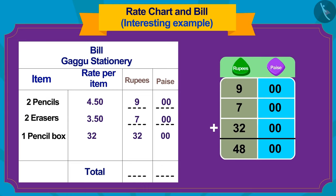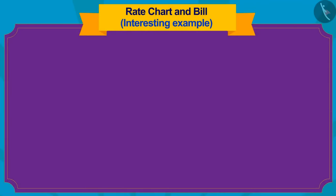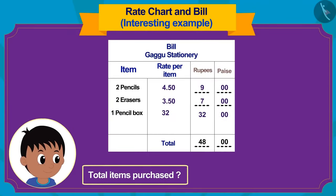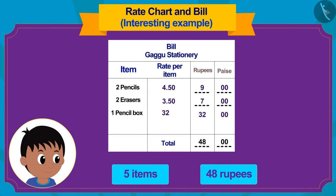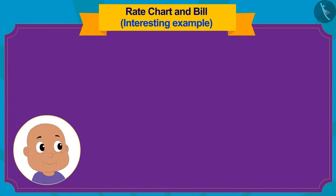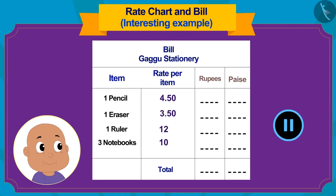Let us write it this way in the bill. In this way, Raju bought a total of 5 items for 48 rupees. Here is a bill for Bablu's purchased items. Can you complete it and find out whether Bablu bought less or more items than Raju, and how much money he spent? You can pause the video and find the answer.